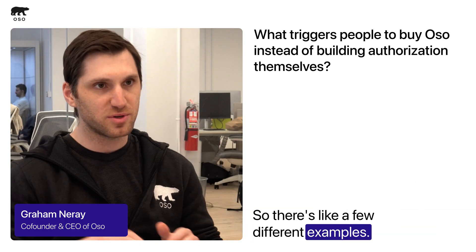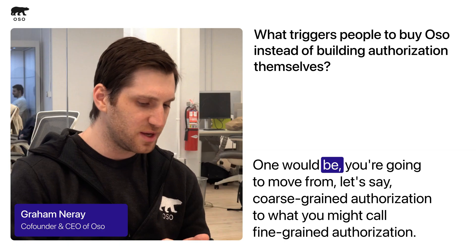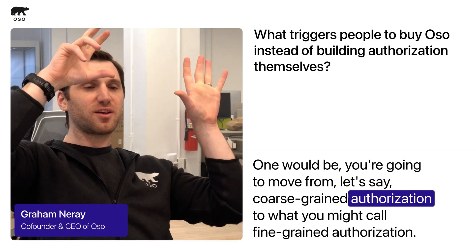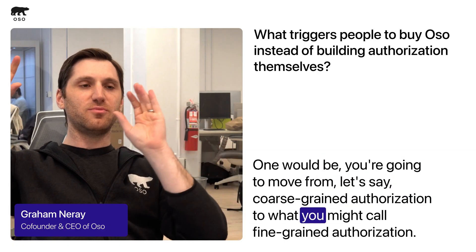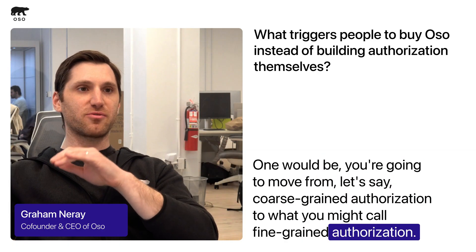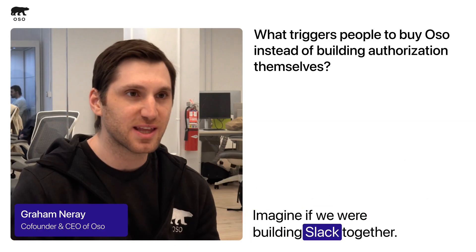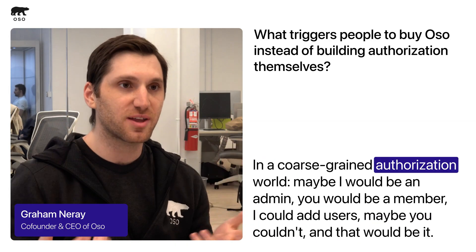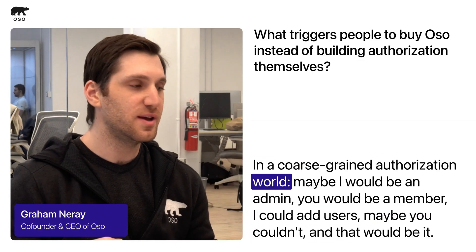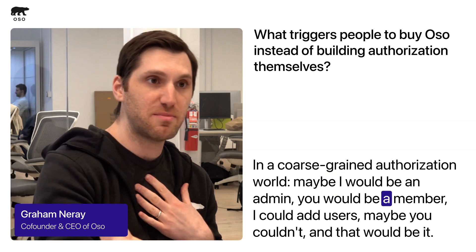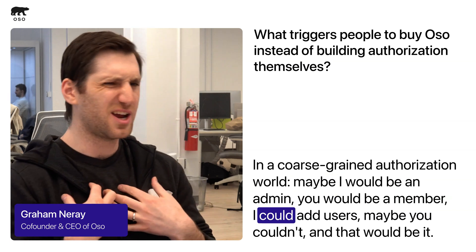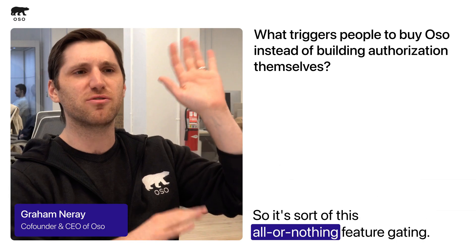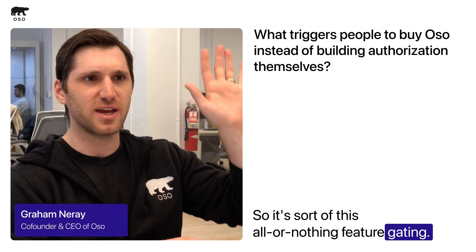There are a few different examples. One would be moving from coarse-grained authorization to what you might call fine-grained authorization. Imagine if we were building Slack together — in a coarse-grained authorization world, maybe I would be an admin, you would be a member, I could add users, maybe you couldn't, and that would be good. It's sort of this all-or-nothing feature gating.